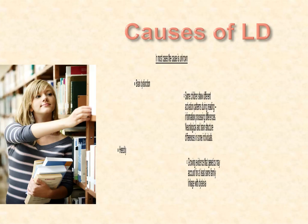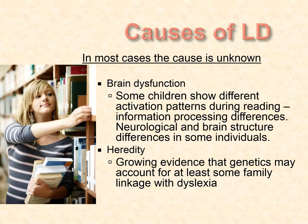What do we know about the cause of learning disabilities? In most cases, the cause is simply not known, and that is important because parents do want to know what caused it. We've started to look at brain differences with more sophisticated brain scanning. We are seeing that some children show different activation patterns during reading, and there are differences in the way they process information. Sometimes we see neurological and brain structure differences in some individuals. From a biological perspective, there is some evidence that genetics may account for some linkage with problems with dyslexia or reading disability — and that's relatively new information.